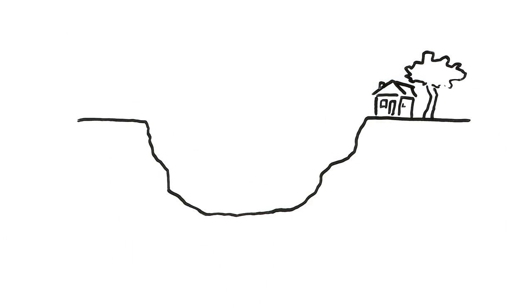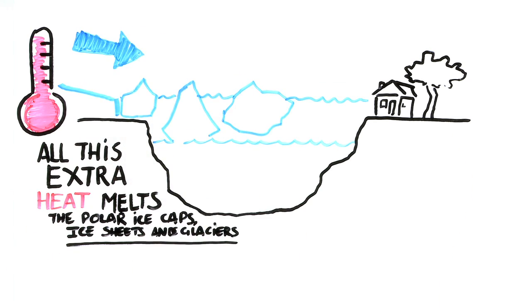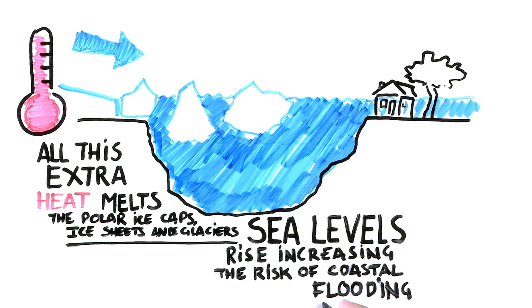This extra heat expands the ocean and also melts the polar ice caps, ice sheets, and glaciers. Sea levels rise, increasing the risk of coastal flooding.